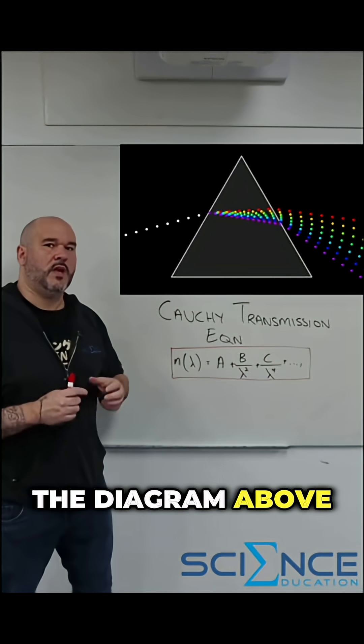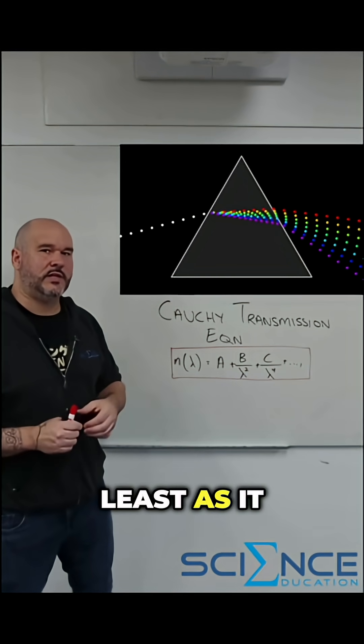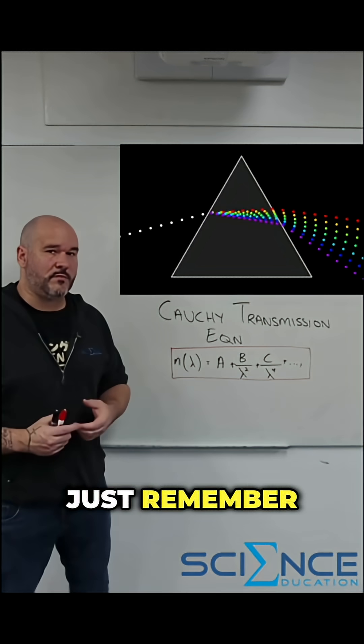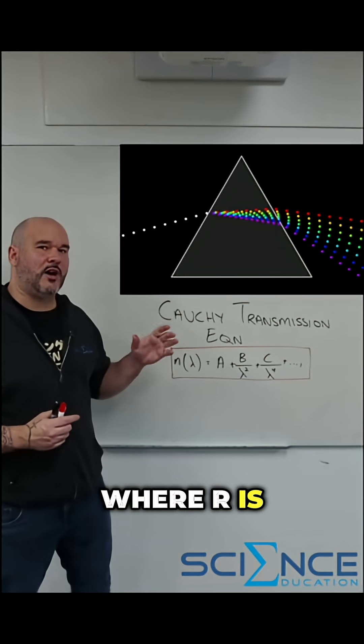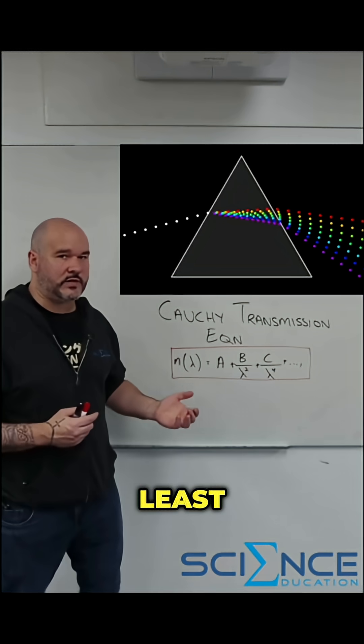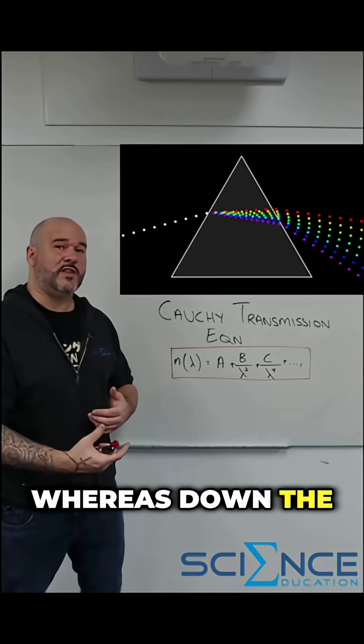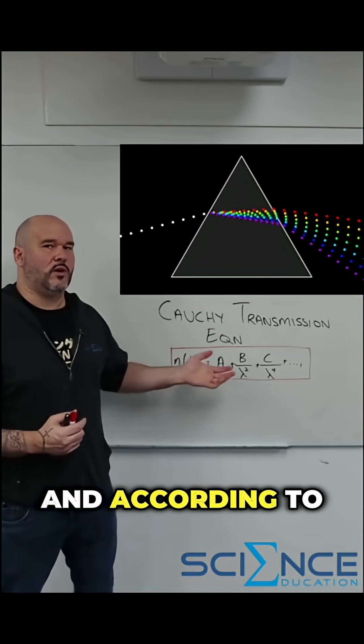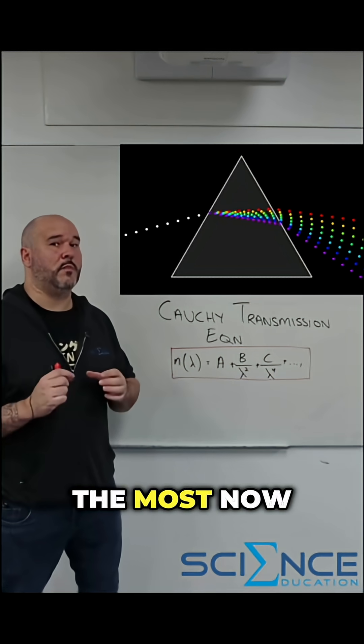Which you can see in the diagram above, red is bending the least as it enters the prism. So if we just remember ROYGBIV where R is red and red is the longest wavelength we would expect red to bend the least when it enters the prism. Whereas down the opposite end is violet. Violet is the shortest wavelength and according to this equation it should bend the most.